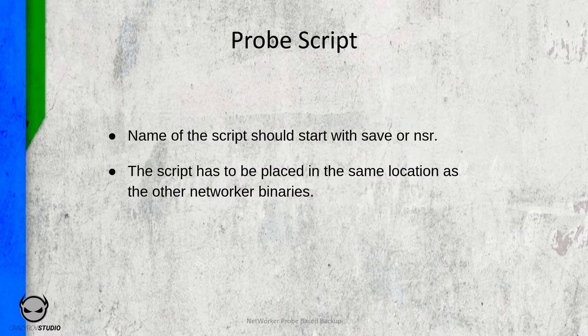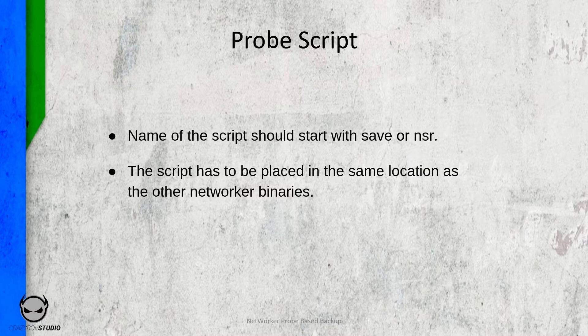The first step is to create the probe scripts on the client, but you cannot just name it anything and place it anywhere you want. The name of the script should always start with 'save' or 'nsr'. The second part of the script name can be anything that defines the purpose of the script, and the script has to be placed in the same location as the NetWorker binaries — C:\Program Files\EMC\NetWorker\nsr\bin on Windows, and /usr/sbin on Linux.